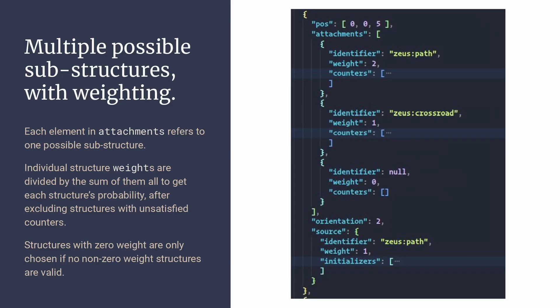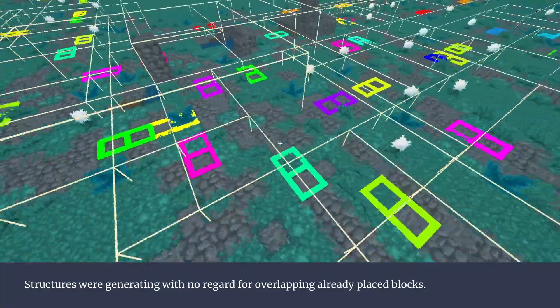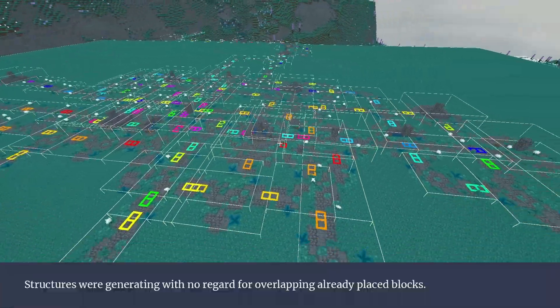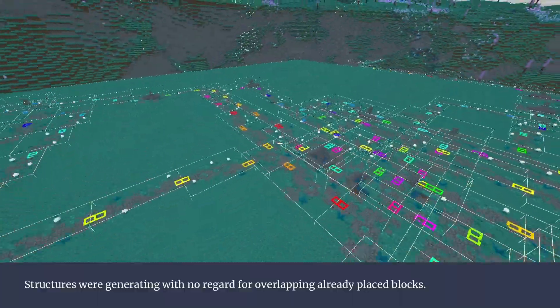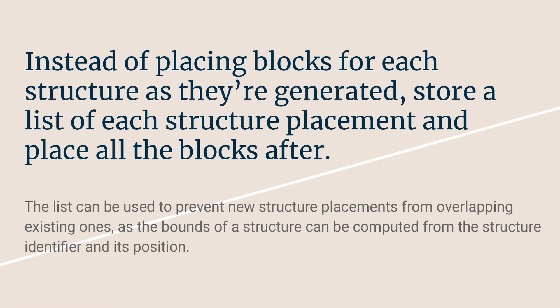Each substructure with unsatisfied counter conditions is removed from the potential pool before computing weights. If there are no non-zero weighted structures left, the first zero-weighted one is selected by default. If there are no structures left at all, the generator considers it a fail state and won't generate anything. At this point counter conditions were passively implemented but there was no overlap checking, so structures had a tendency to circle into impossible-to-process messes. I also was placing blocks for each substructure immediately as it was generated, making it impossible to cancel a structure if it needed to be regenerated. I fixed both issues at once by rewriting the generation algorithm to maintain a list of structures and their target positions instead of placing them immediately, checking collisions against that list, and deferring block placement to the very end so that if generation fails, I can just ignore the list.